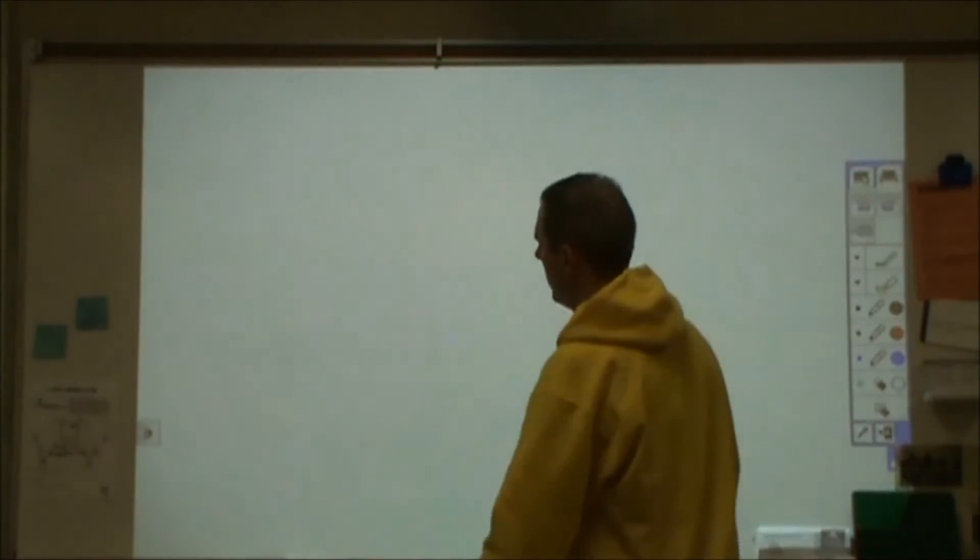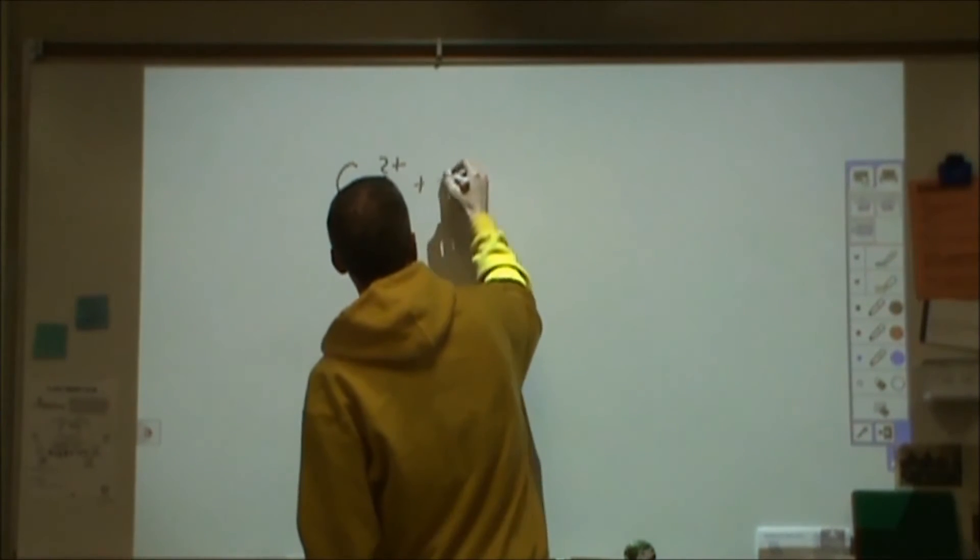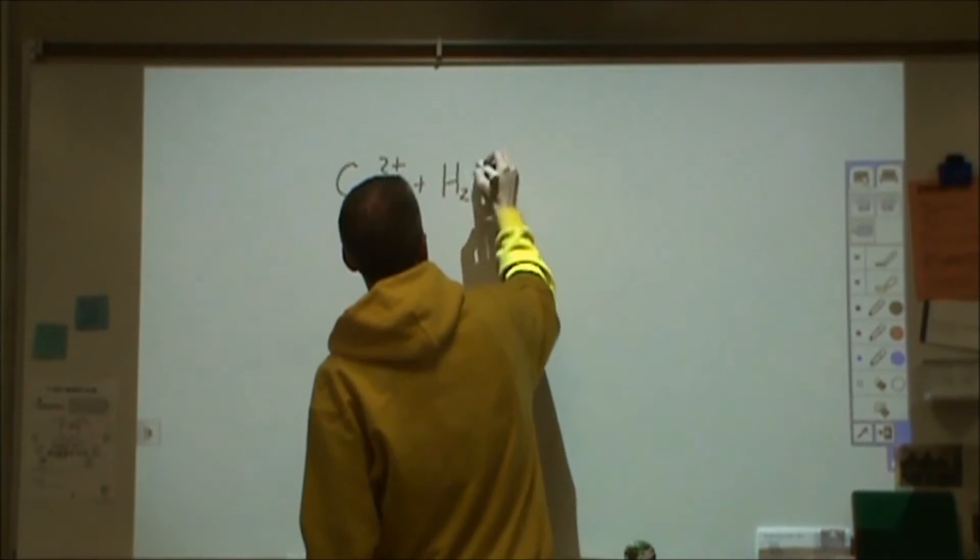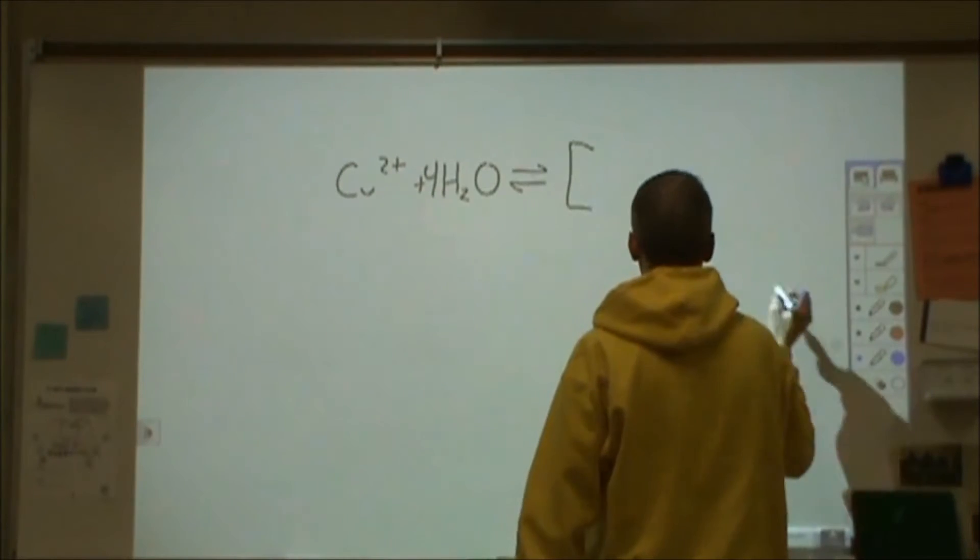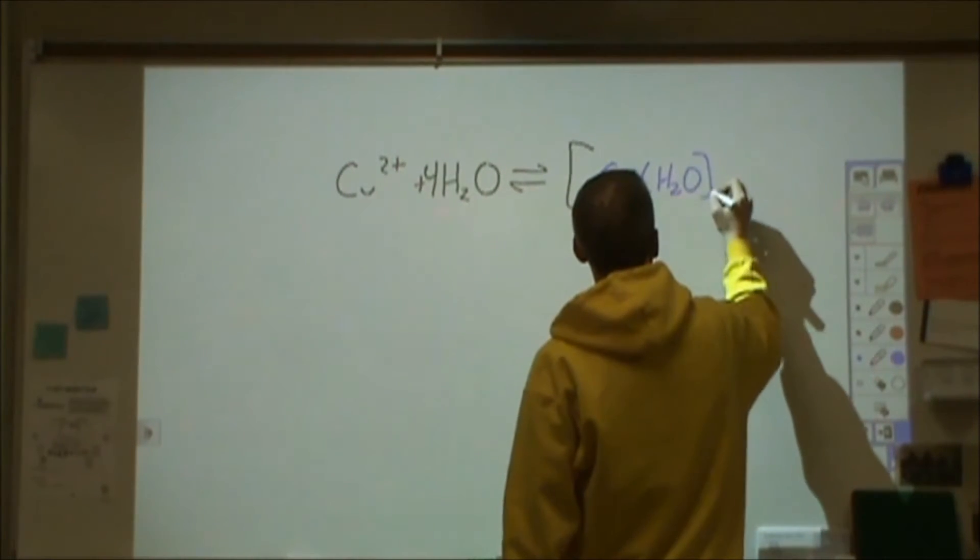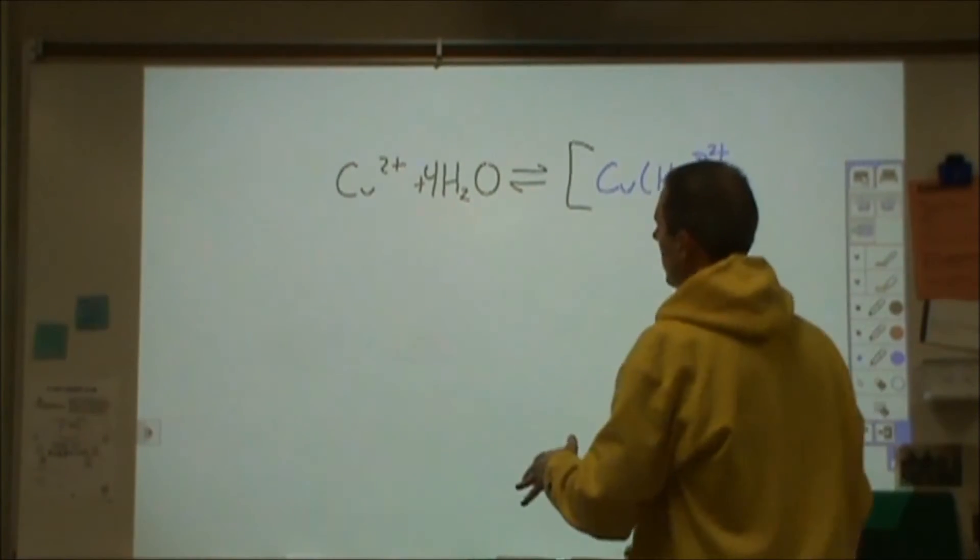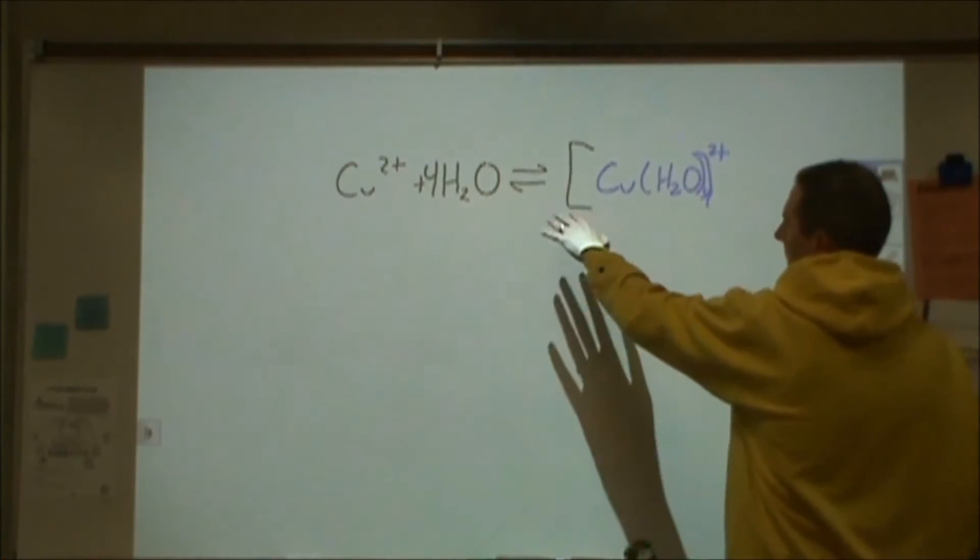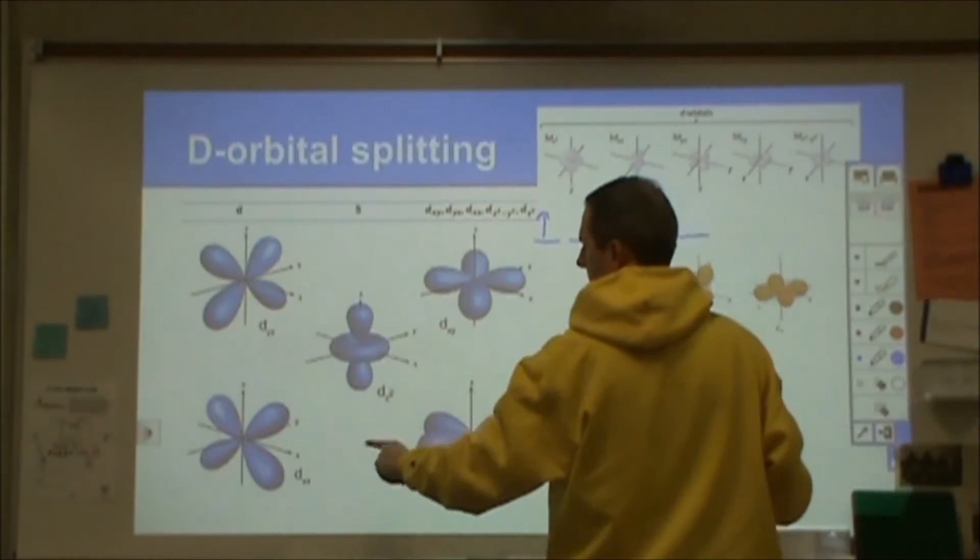What complicates things is when you add ligands into the mix. So if I have a copper 2+ ion and I surround that copper 2+ ion with some water molecules, and I form the complex ion, the ligands are going to interact with each of these orbitals differently.